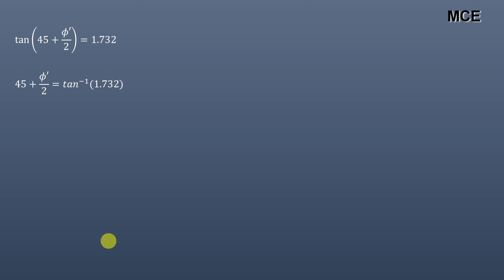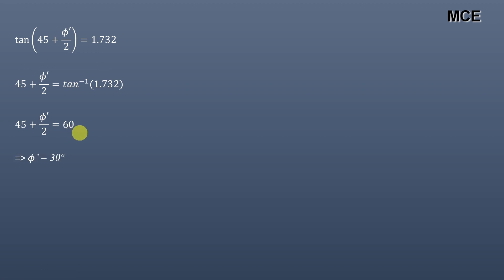This gives 45 + φ'/2 = tan⁻¹(1.732), which equals 60 degrees. Therefore the value of the effective angle of friction φ' is equal to 30 degrees.